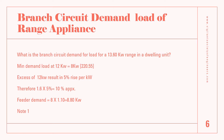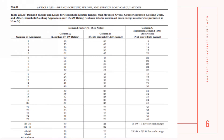Next question: what is the branch circuit demand load for a 13.60 kilowatt range in a dwelling unit? Using Table 220.55, we can only get values up to 12 kilowatt and we are limited from going in excess of that value in the table. So for a range of 13.60 kilowatt, we take the first 12 kilowatt from Table 220.55, and the demand for a maximum of 12 kilowatt is 8 kilowatt.